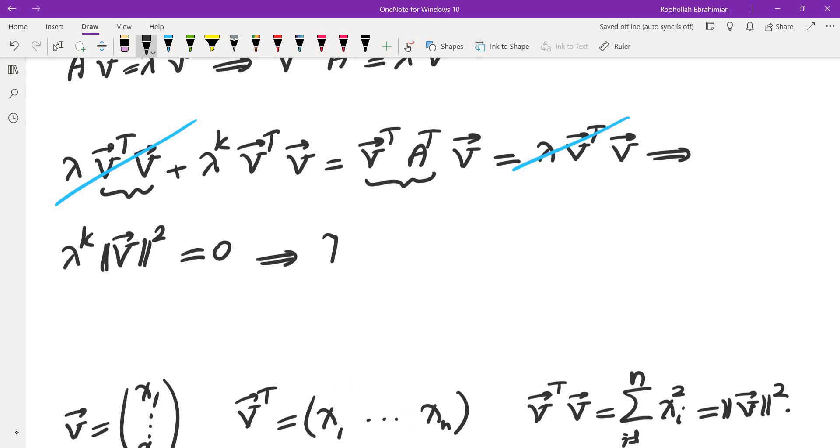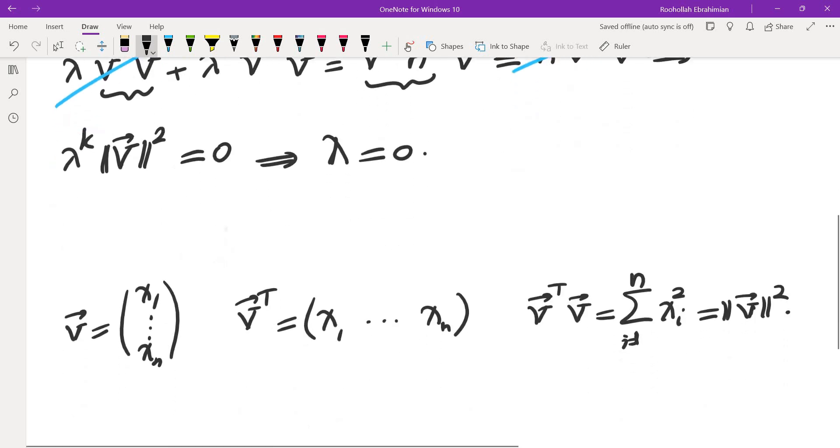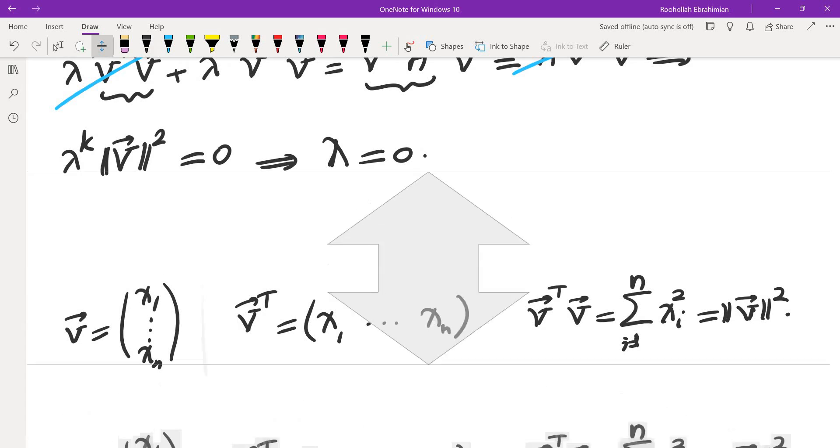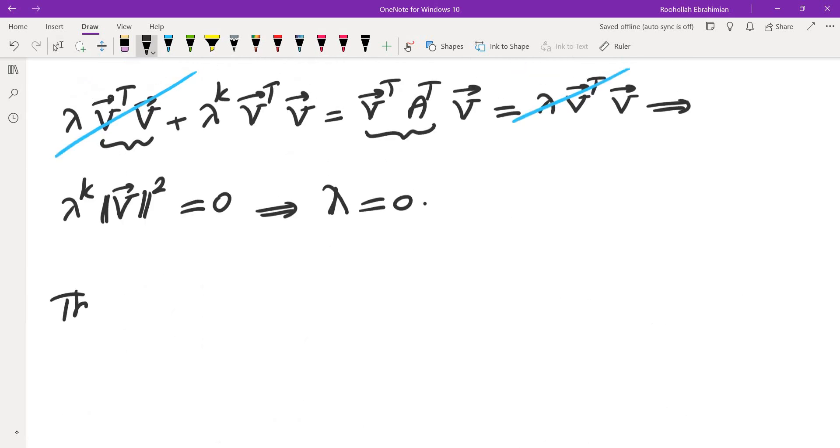That's equal to zero. So this tells us that lambda is equal to zero. In other words, what I showed is that all eigenvectors, all eigenvalues of A are zero. Therefore, all eigenvalues of A are zero.